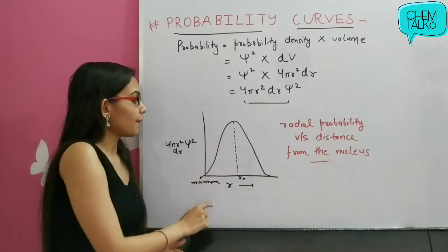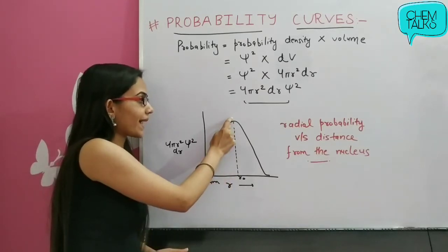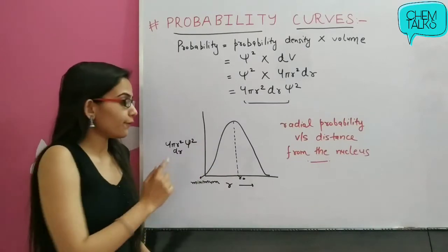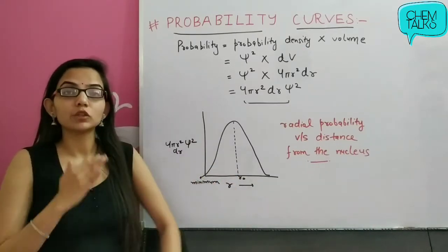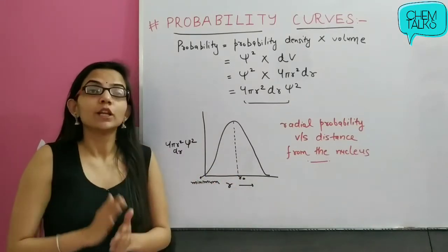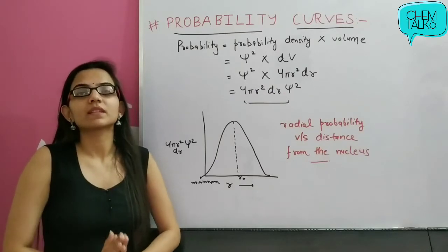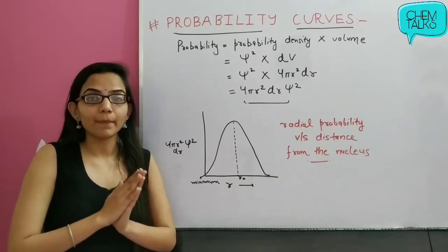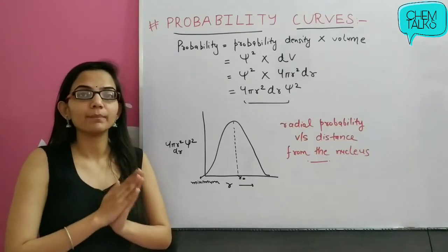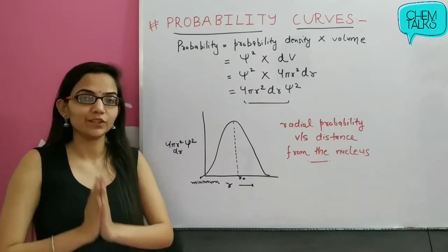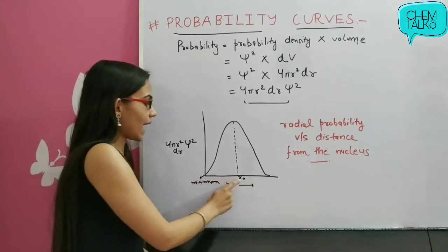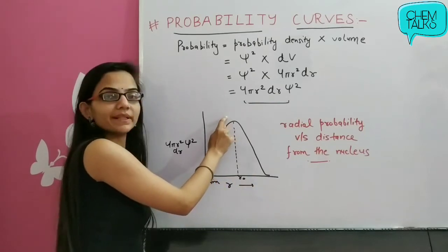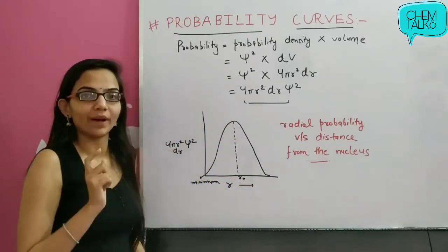This is the graph. You see R-naught — the maximum point, basically the peak point of the curve. When going further from the nucleus, at this peak point there are maximum chances of getting electrons. What do we call it? Maximum probability radius, or maximum probability region of finding the electron. So R-naught is the maximum probability radius.